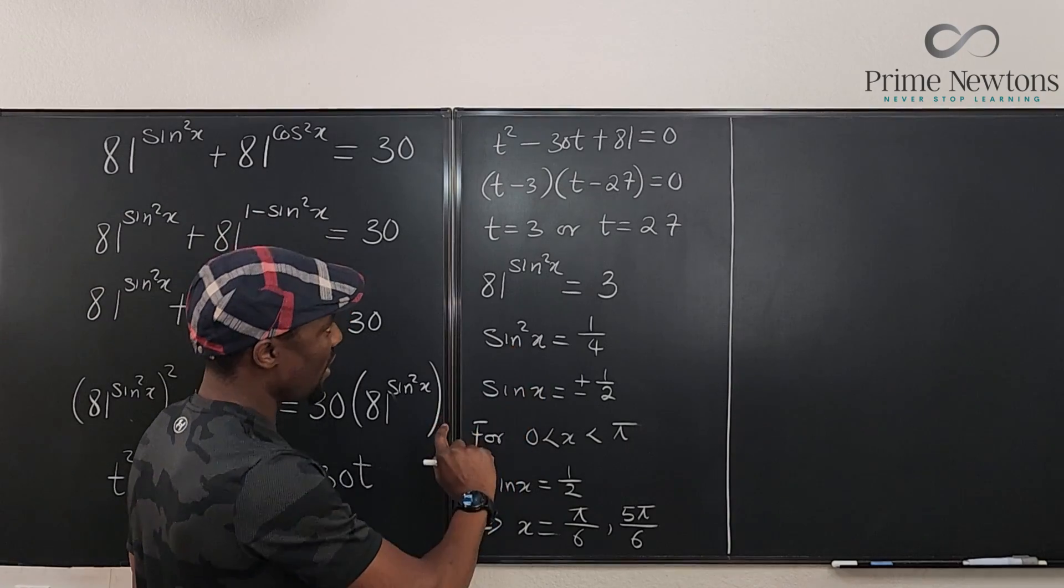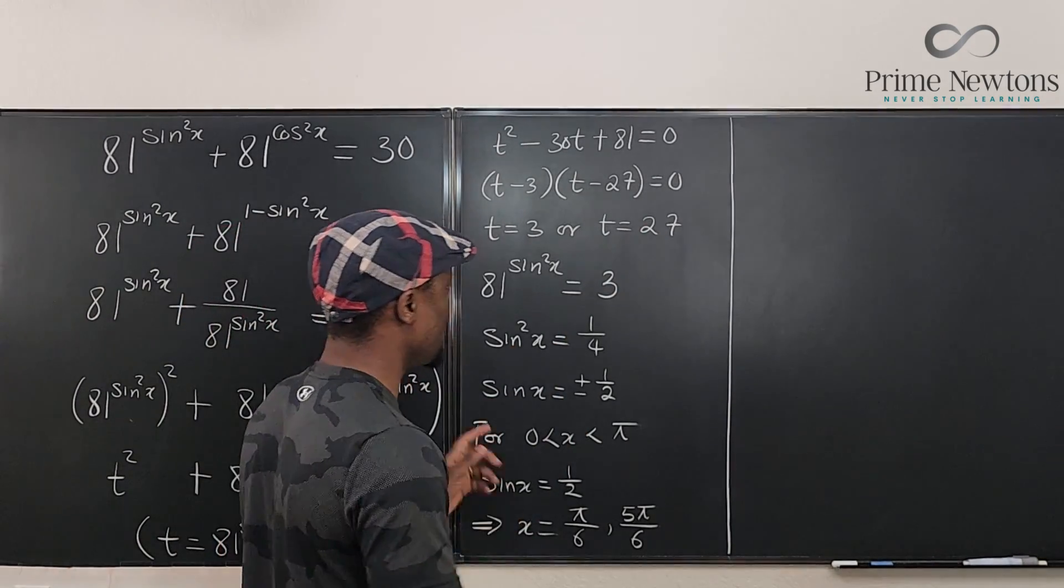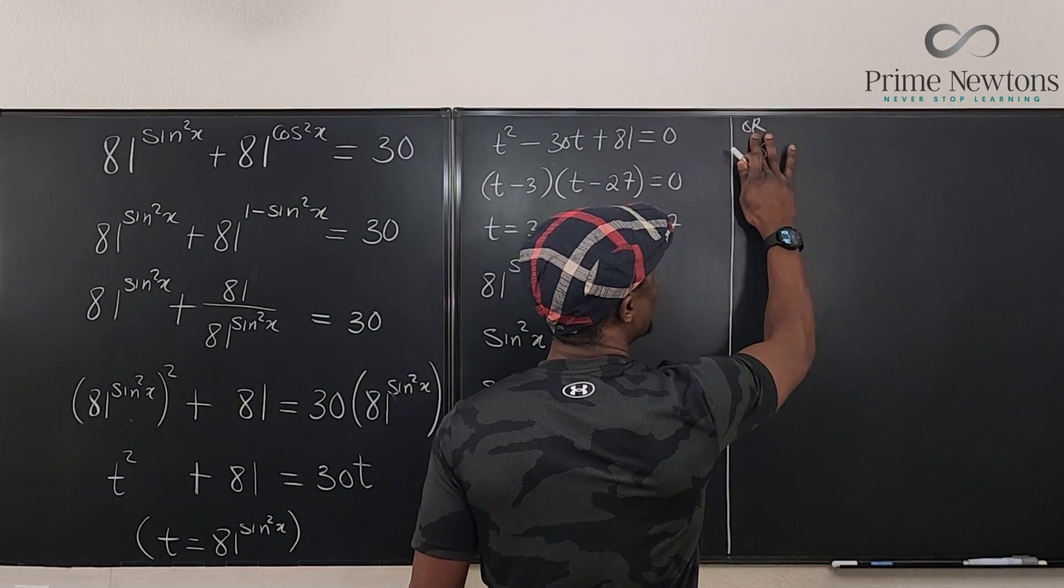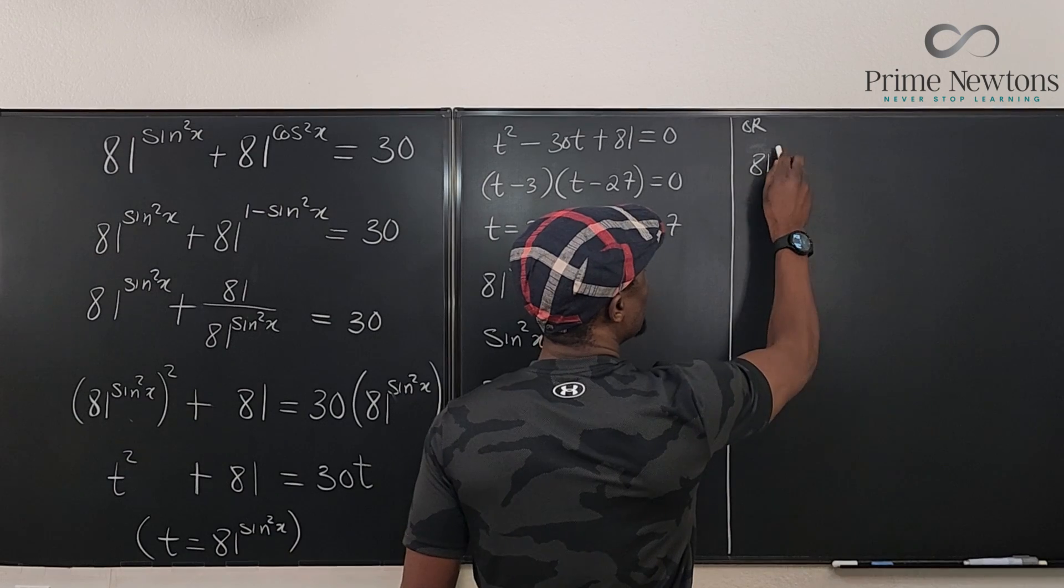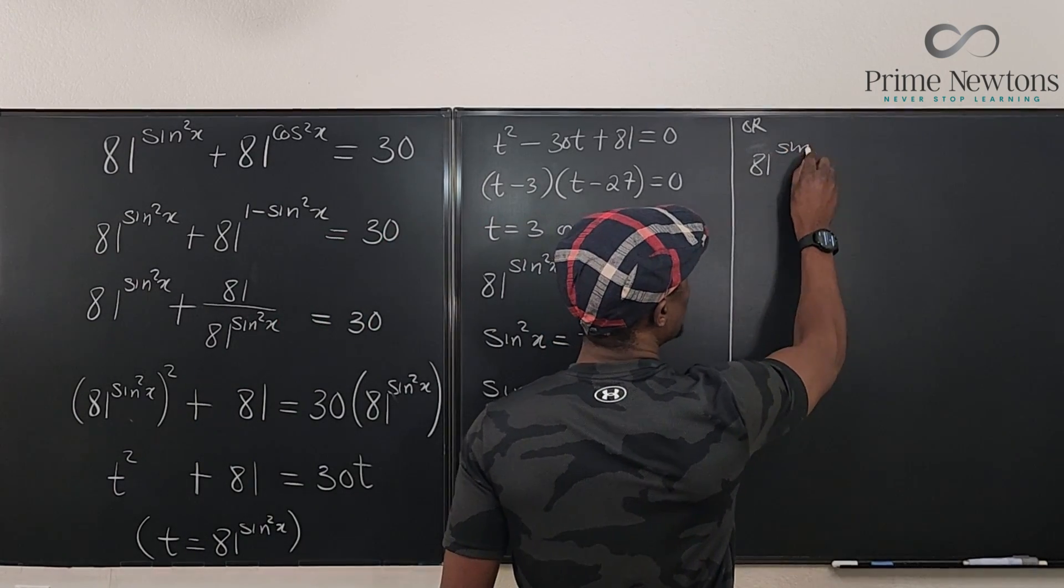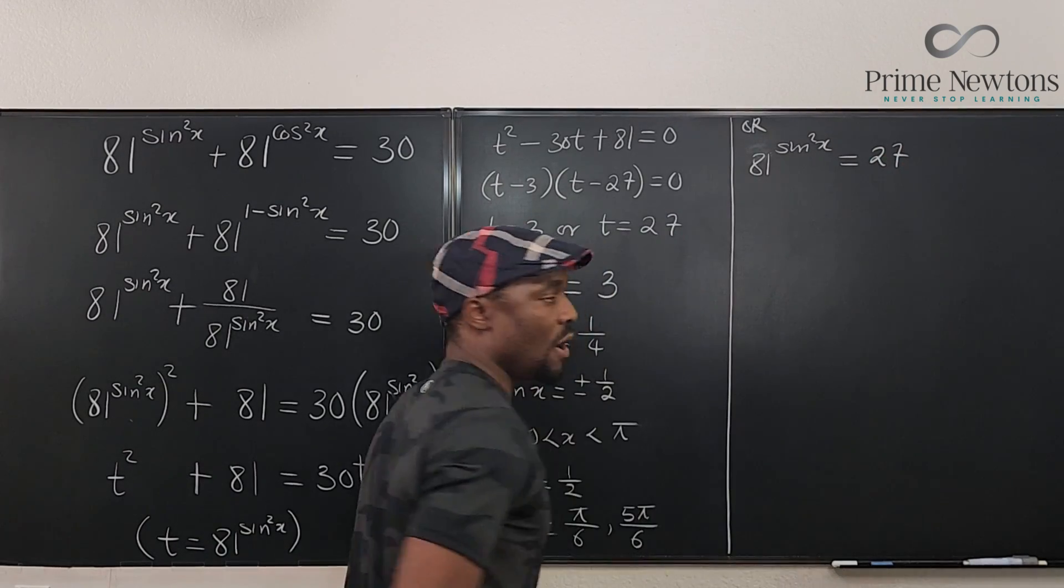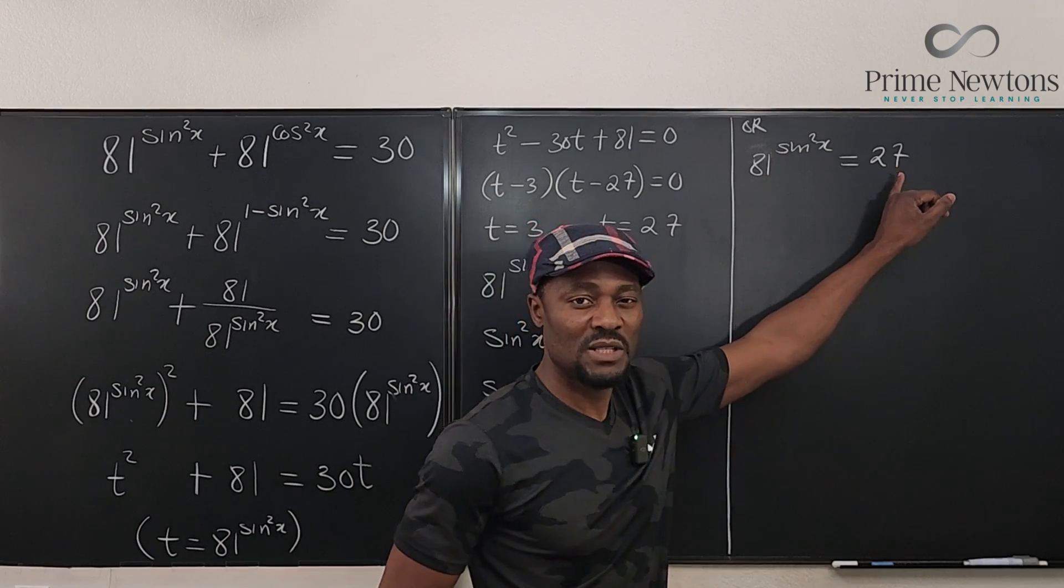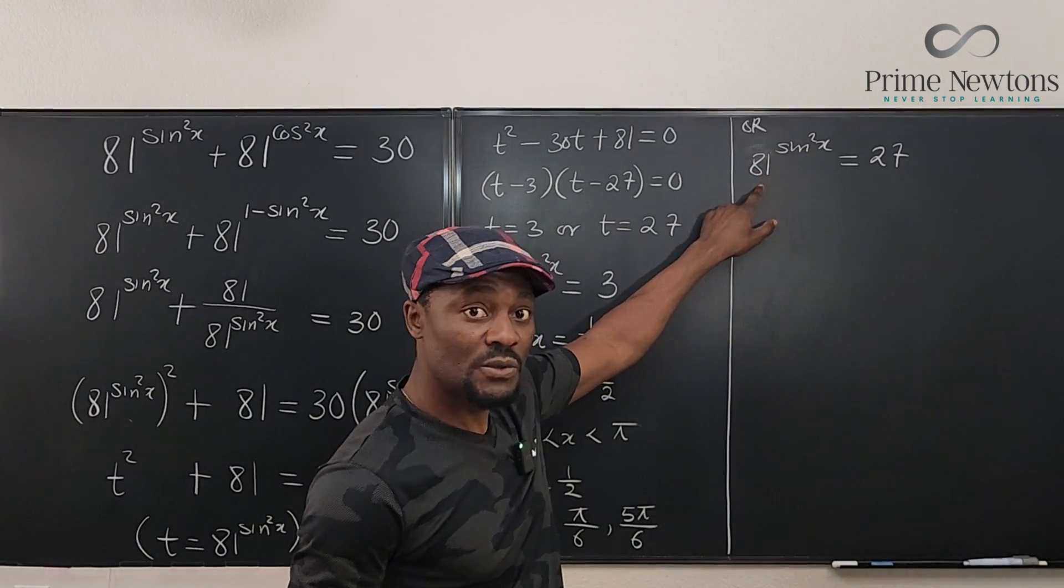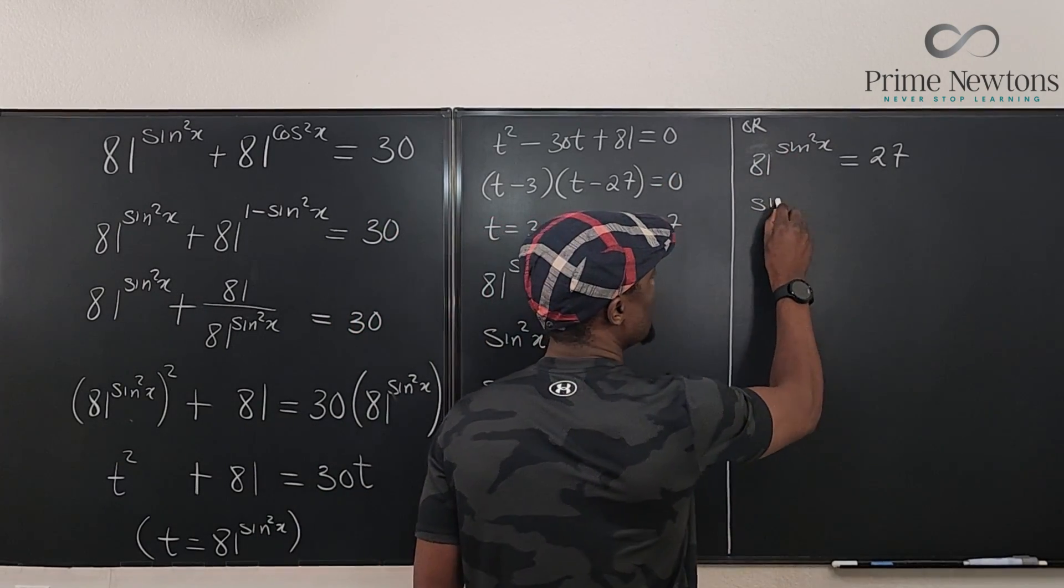So let's move on to this. The other option is if t is 27, it's very similar to this. So we have 81 to sine squared x will be equal to 27. Now, what power would you raise 81 to to get 27? Well, bring this to 3. You take the fourth root of it and then you cube it. So 3 over 4 is what this is going to be. You can solve it yourself. So we know that sine squared x is 3 over 4.